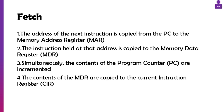We go to the address held in the MAR and copy whatever's inside that memory location into the MDR, the memory data register. Whilst that's happening, we increment the program counter by one — or change it, because it might be an instruction that alters the program counter, which we'll look at with Little Man Computer. Once copied to the MDR, the CPU copies the contents of the MDR into the current instruction register, the CIR. So the MAR stores the address, and the MDR stores the actual value or instruction.